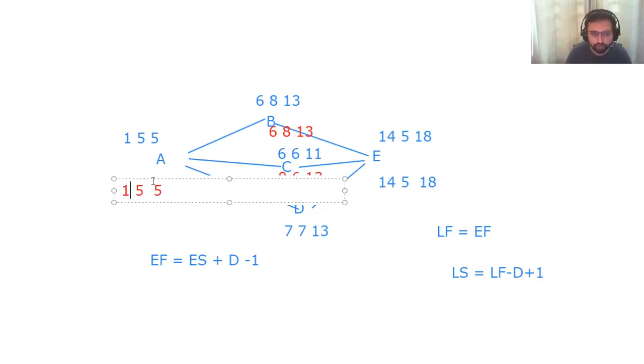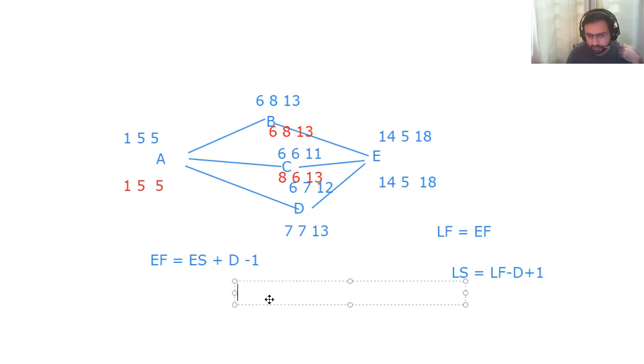If we calculate the float of activity A, it is 0. For float of B is 0. E is 0. So it is proved A, B, E is our critical path. C, 13 minus 11 is equal to 2. The activity C has a float. Path A, C has a float of 2. Then path A, D, E has a float of 1. So this proves that first thing, A, B, E is a critical path, and C and D have a float of 2 and 1 respectively.